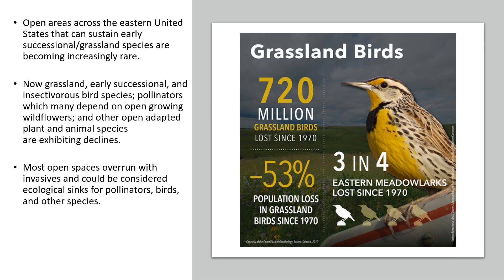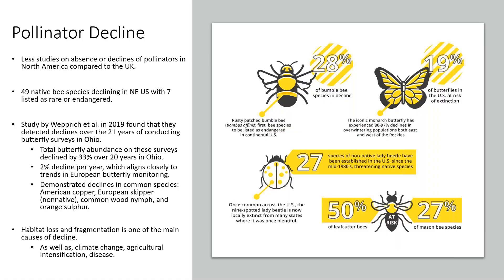Open areas across the eastern United States that can sustain early successional and grassland species are becoming increasingly rare. Grassland early successional insectivorous species, pollinators, and open-adapted plant and animal species are all exhibiting declines. Most of our open areas that do exist on the landscape are overrun with invasives and are considered ecological sinks for pollinators, birds, and other species.